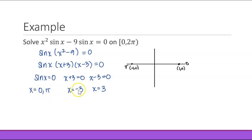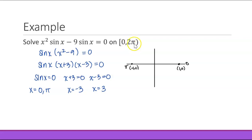At quick glance it looks like we have four solutions, but we must be careful — we're solving on the interval from 0 to 2 pi, which doesn't include negative numbers. So x equals negative 3 is excluded. However, x equals 3 is in the interval because 2 pi is approximately 6.28 and pi is 3.14, so 3 is between 0 and 2 pi. Therefore we have three solutions: 0, pi, and 3.